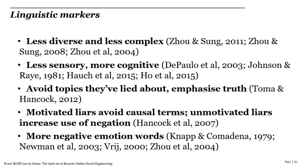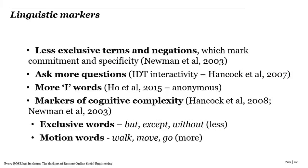It sounds obvious, but liars will avoid topics they're lying about and emphasize things they're telling the truth about. There may be a difference between motivated and unmotivated liars, and liars may use more negative emotion words. Liars may also ask more questions, perhaps to shift focus onto the person they're deceiving. Contrary to what was just said, some research suggests liars may use more first-person pronouns if they're anonymous — which suggests more work needs to be done in this area, and that these markers aren't 100% reliable for everyone.